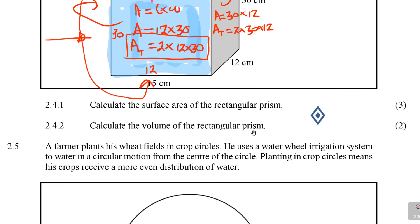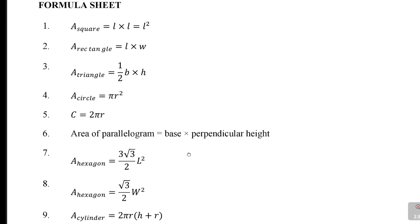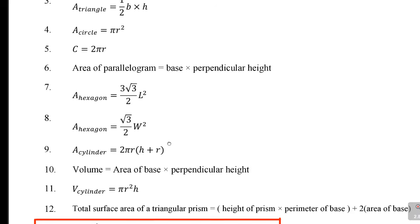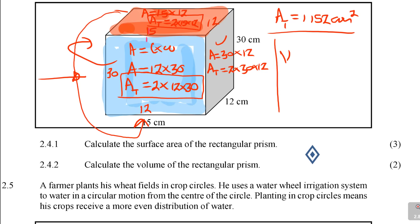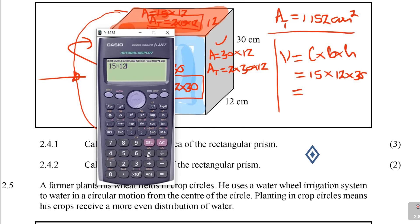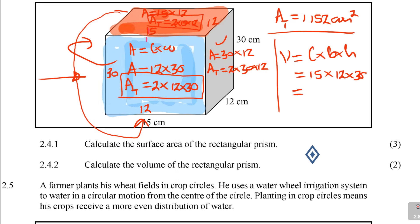The next part says: calculate the volume of the rectangular prism. Volume is V equals length times breadth times height, which is 15 times 12 times 30. Even if you mix up the order it doesn't matter — the key thing is to multiply those three numbers. 15 times 12 times 30 equals 5,400. Volume is in cubic centimetres — be careful with the units.